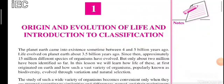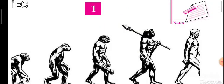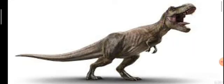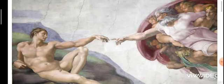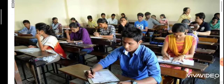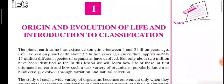Hello friends, today we are going to study the first unit of NIO's biology: origin and evolution of life, and introduction to classification. In this chapter, we will get to know about how life was originated on earth, how we can define evolution, whether there is any practical basis behind these theories, and what are the visible signs of evolution. We will solve all these questions without losing track of the syllabus. I hope this will help you not only from an exam's point of view, but also from a conceptual basis. So let's start.